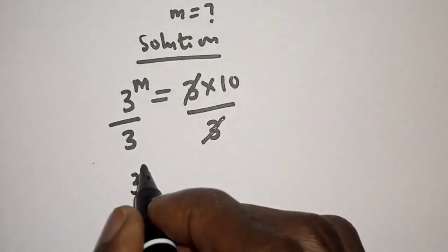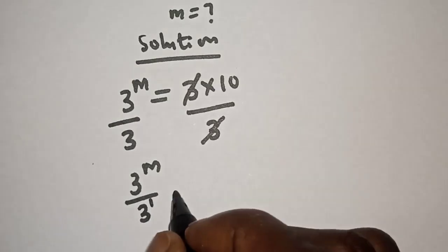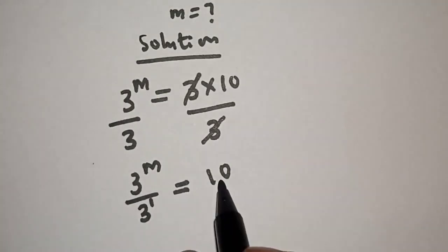We have 3 raised to power m over 3, also raised to power 1, is equal to 10.